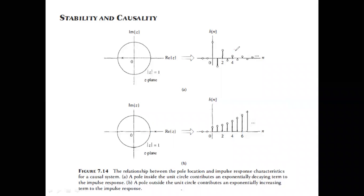If you have a system that is causal — right-sided, nothing on the left side — then the rule is: if you want the system to be stable, its transfer function should have all poles inside the unit circle.